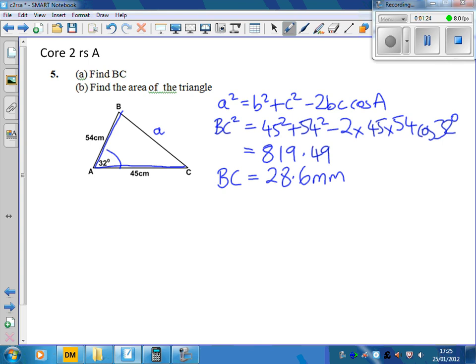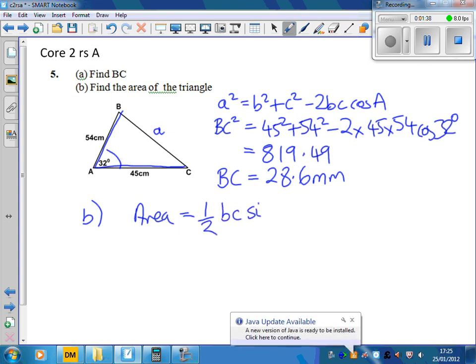And you can find the area of the triangle using the two sides and the angle that you have, using the formula for area which is a half bc sine A. For the rest of the method, see question three.